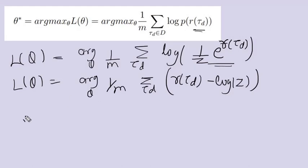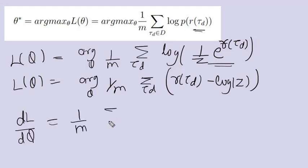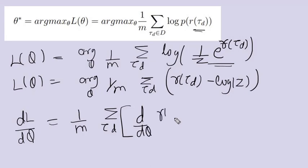To get the value of theta we take the derivative of L with respect to theta. When we take the derivative it will be 1 by m summation over all the human trajectories of d by d theta of the reward of the human trajectory, minus the derivative of the log Z term, which by the chain rule becomes 1 by Z times dZ by d theta.